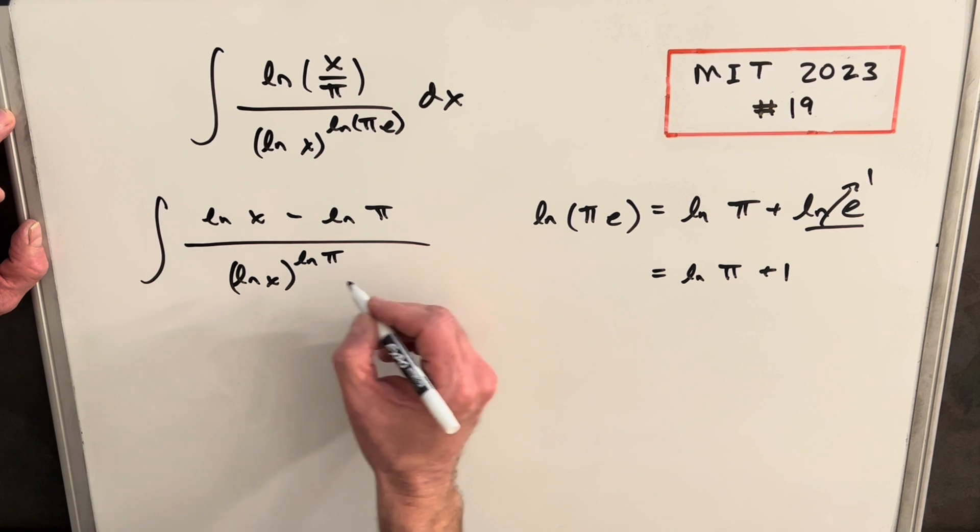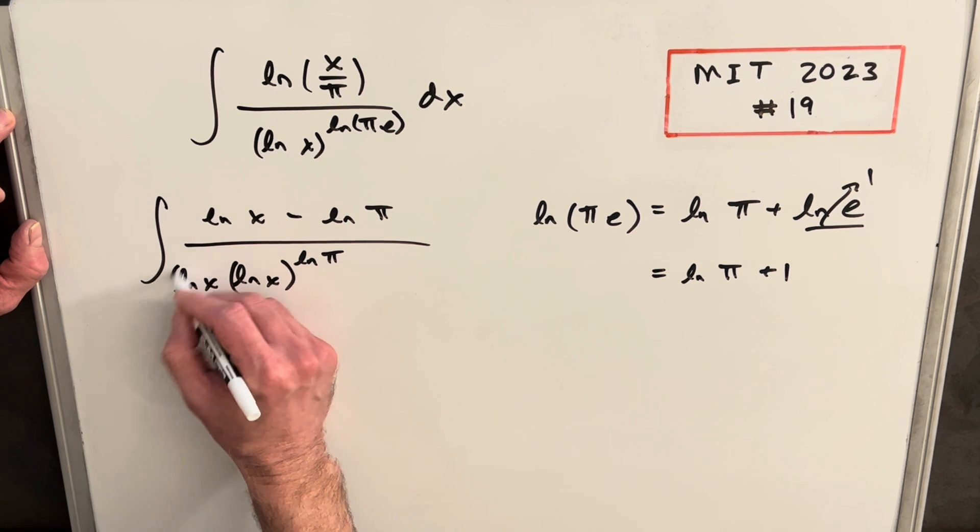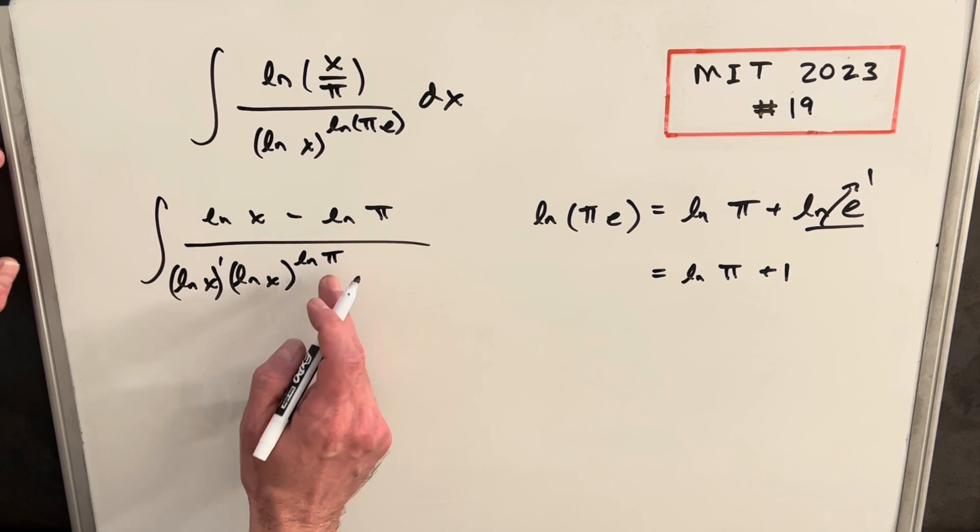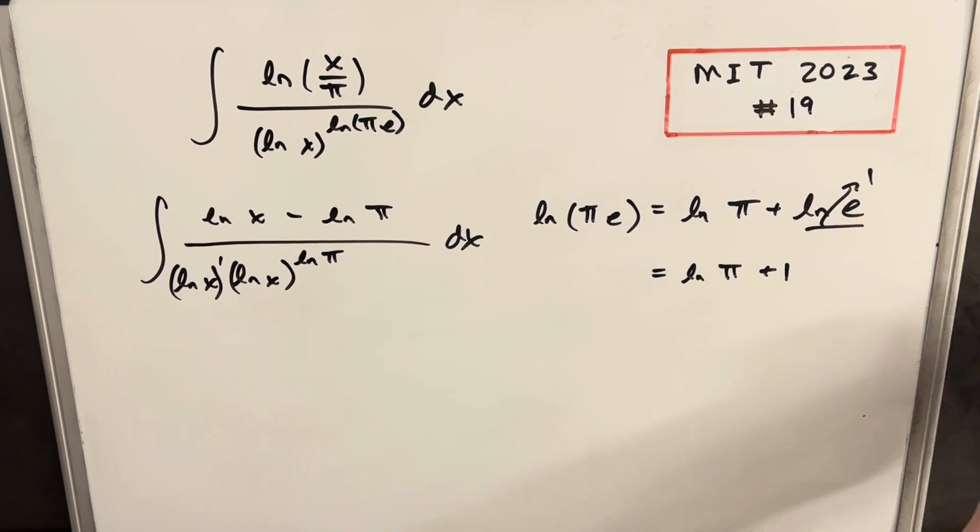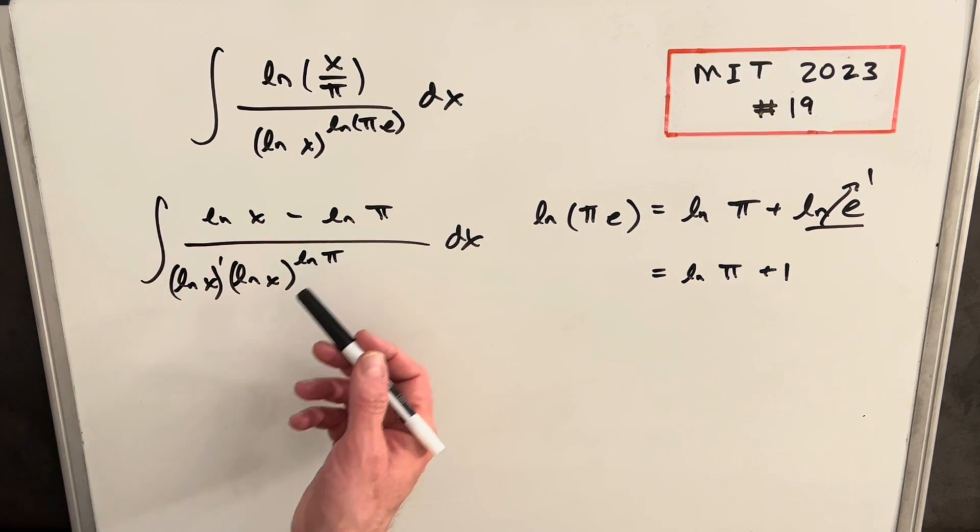So we can write an ln x here. Just noticing if we add the exponents here, we get ln π plus one, which is this. And because we're subtracting up here, we can now split this into two integrals.